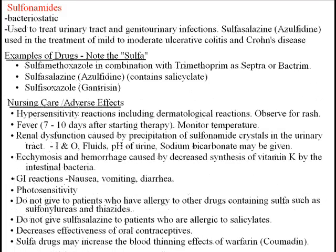Sulfonamides are bacteriostatic, meaning they interfere with the growth of bacterial cells. They are used to treat UTIs and GI infections. Sulfasalazine, one of the drugs in this category, is used to treat mild to moderate ulcerative colitis and Crohn's disease. All drugs in this class have 'sulfa' at the beginning of their generic name, which is a good indicator.